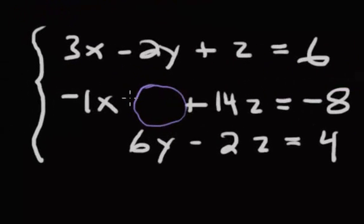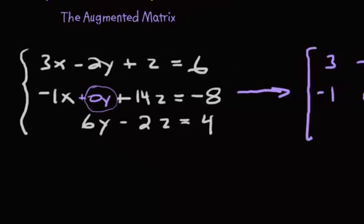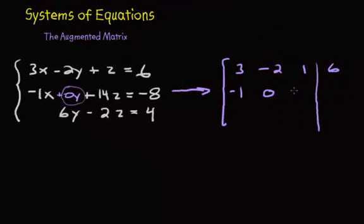...because if there's no y, you can really treat it as 0y. But if it's 0y, we're just going to erase it, because we don't need to write that in. But just know that if there's no y, it's just a 0. And then the 14z, so we take the 14, and then that's a negative 8. Now, there's no x, so we're just going to put a 0 for x, 6y, and negative 2z, so negative 2, and then that 4. Close the bracket, and there's our augmented matrix.